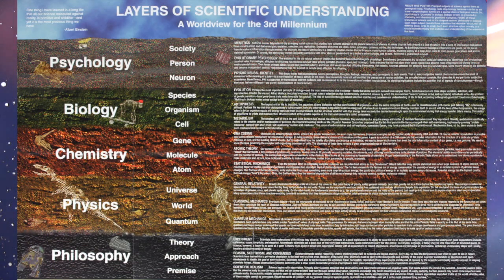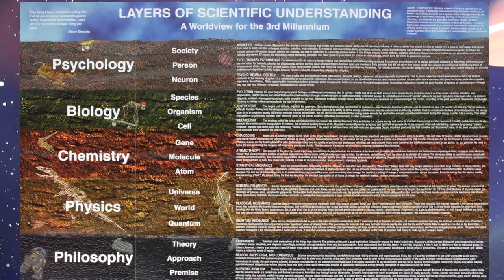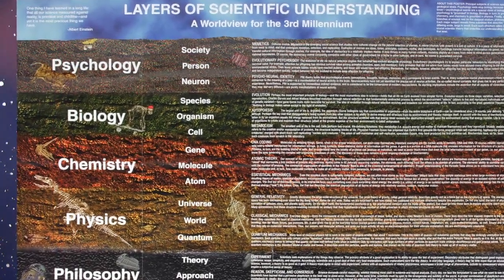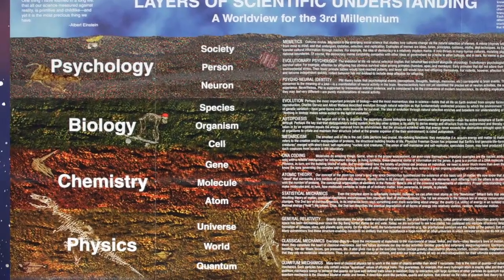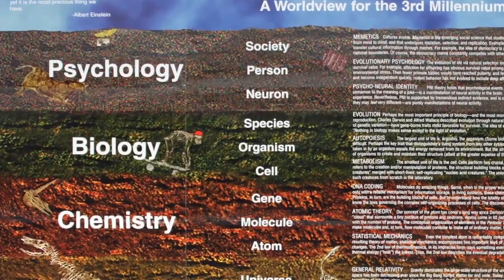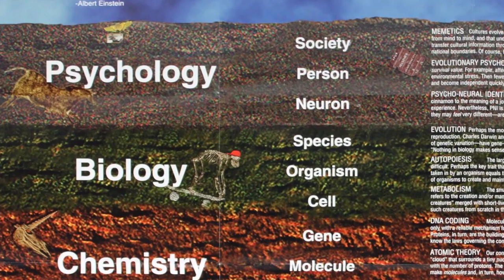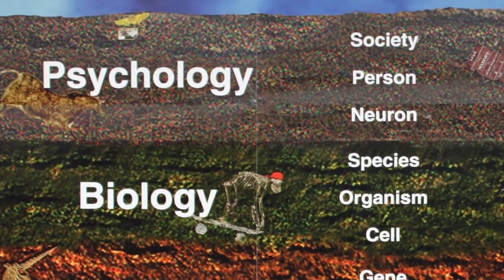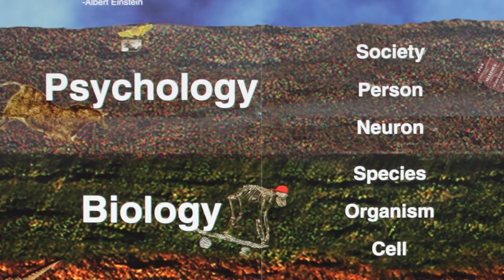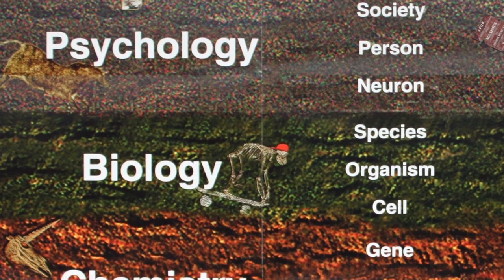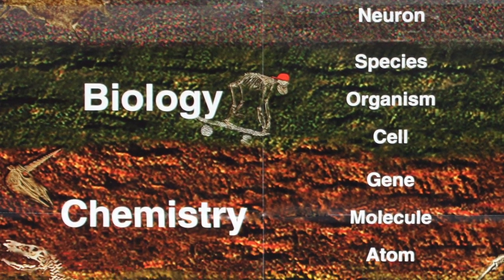Consider this Layers of Scientific Understanding poster. Principal subjects of science appear here as geological strata. Psychology rests atop biology because, as far as we know, psychological events are a special class of biological events. So psychology is grounded in biology. Biology, in turn, is grounded in chemistry, and chemistry is grounded in physics.